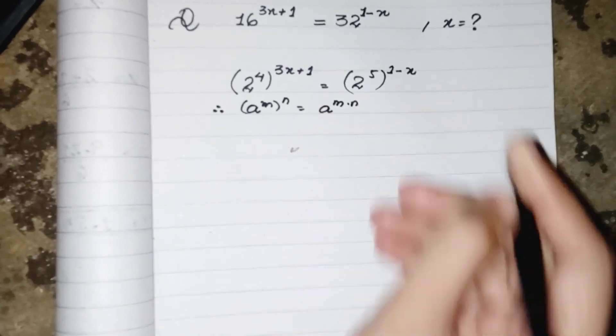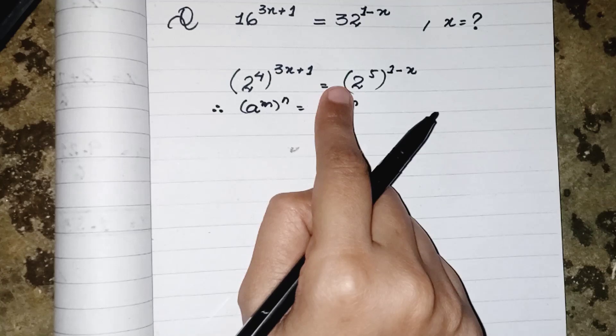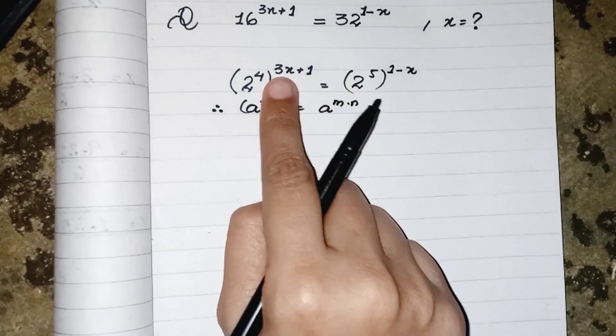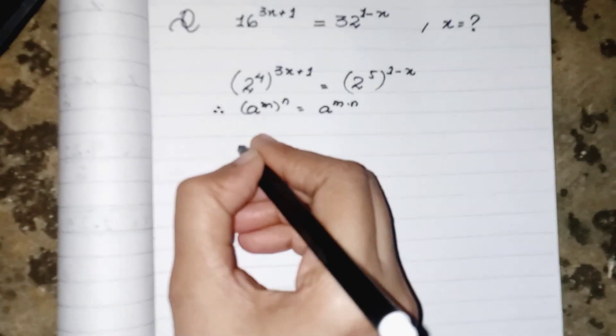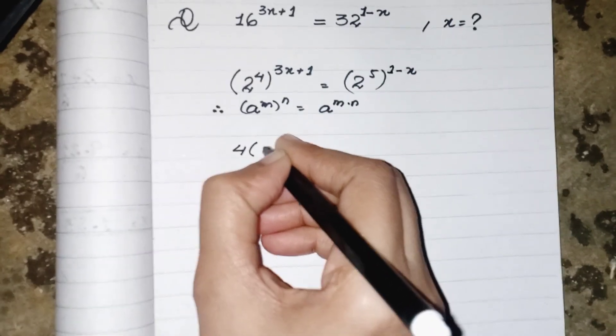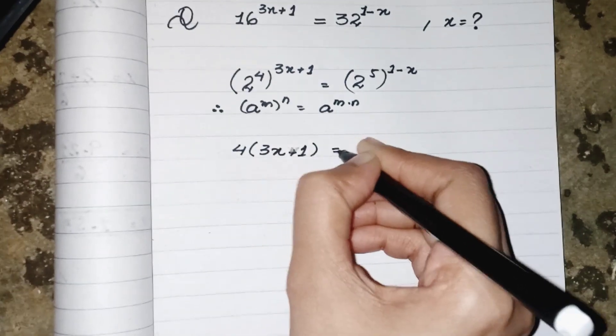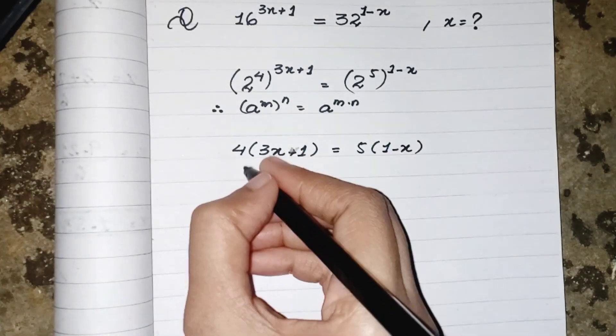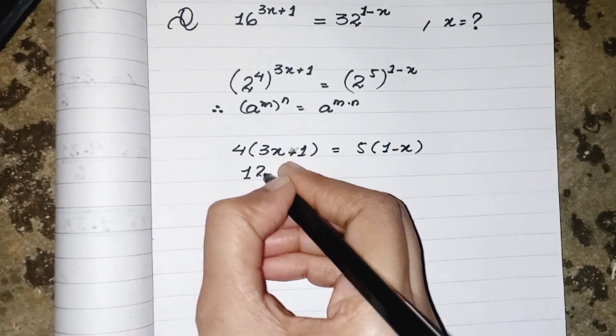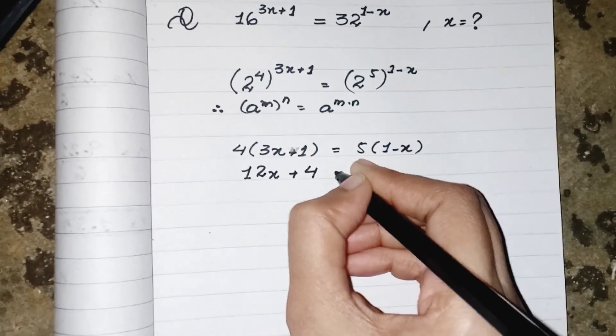And over here both bases are same, so we can equate the powers. So we are just writing the powers: 4 times 3x plus 1 equals to 5 times 1 minus x. 4 multiply by 3 will result as 12x, 4 multiply by 1 result as 4.